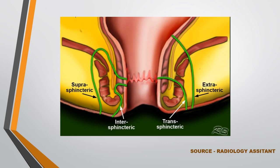The most common classification used is the Parks classification. When the internal opening is located in the anal canal and the tract traverses through both the internal and external sphincter and opens into the external opening site, it is called a transsphincteric type of perineal fistula. Whenever we see a fistula, we have to look for the course of the tract — whether it is traversing through both sphincters. When the tract is located between the internal and external sphincter and opens into the external opening site, it is called an intersphincteric type of perineal fistula.